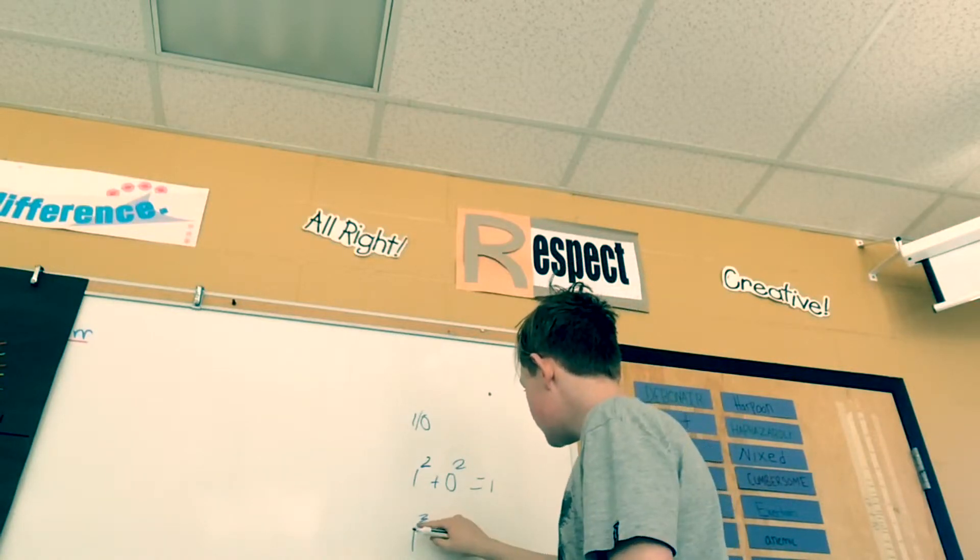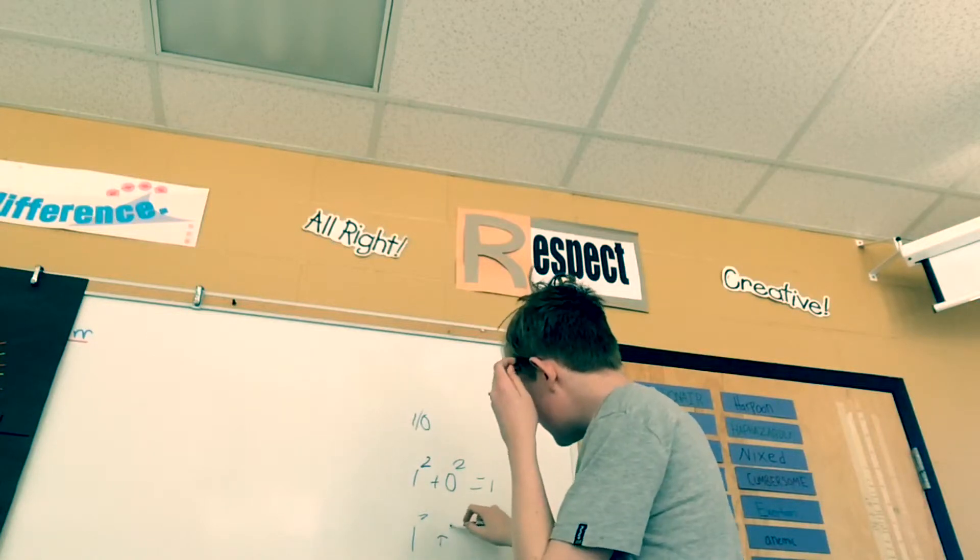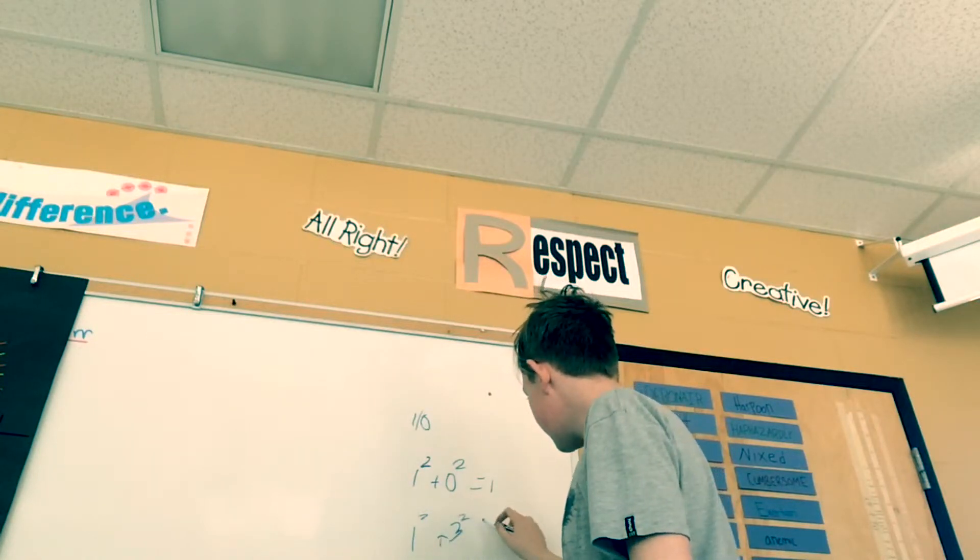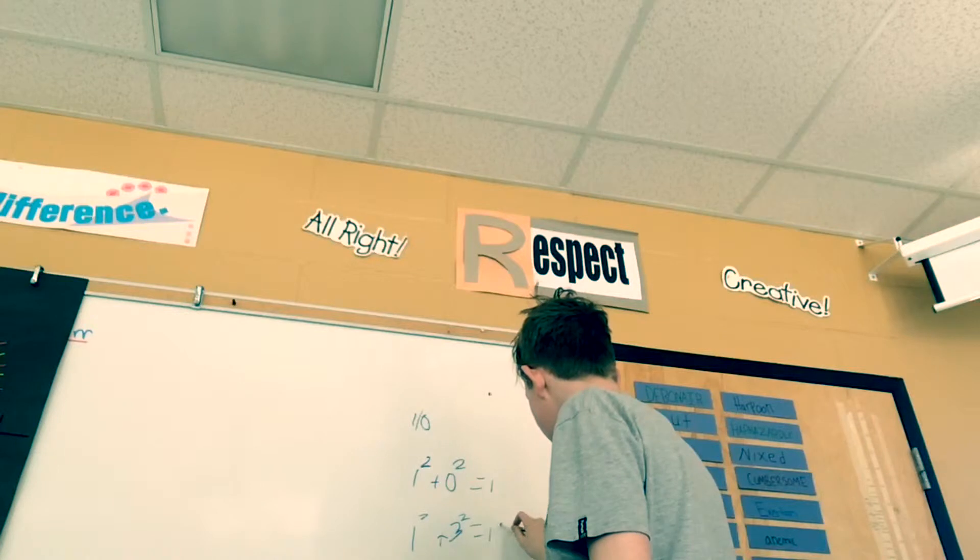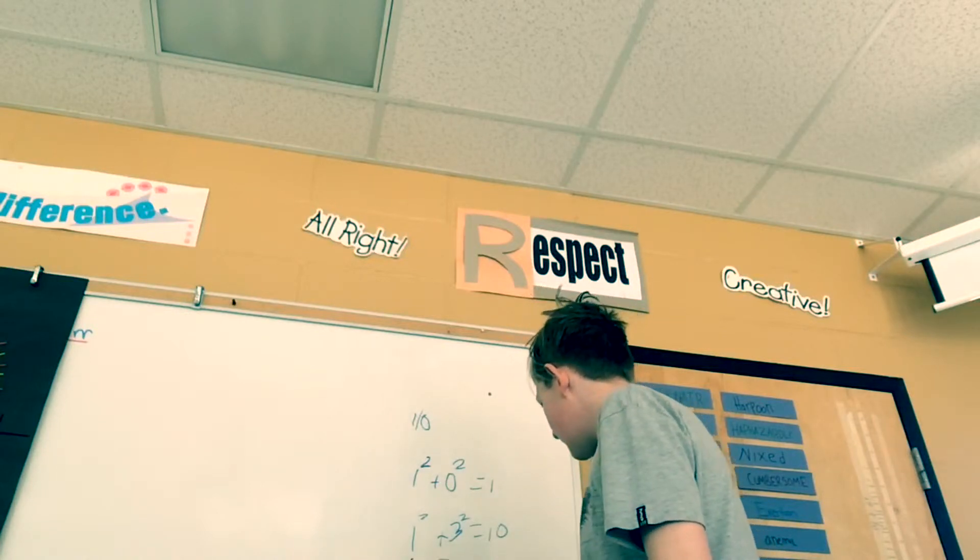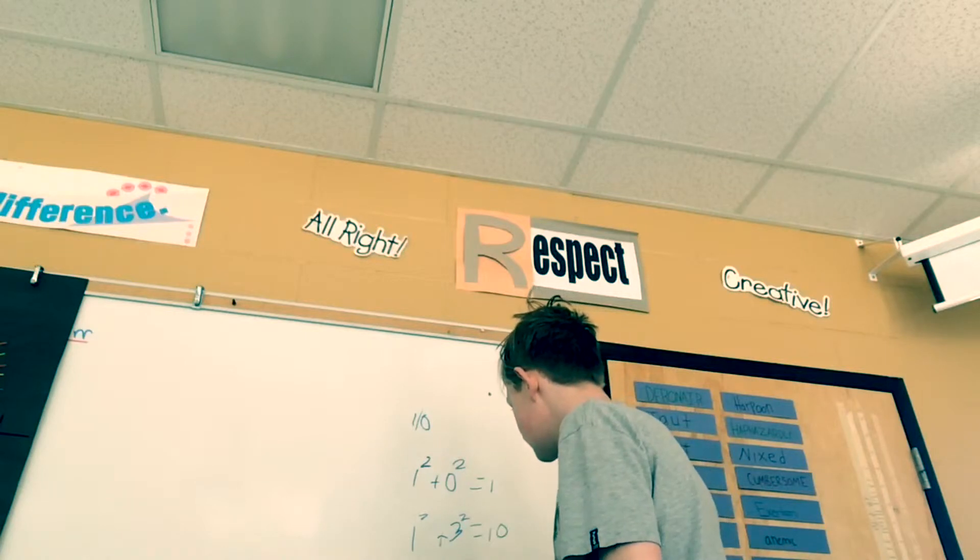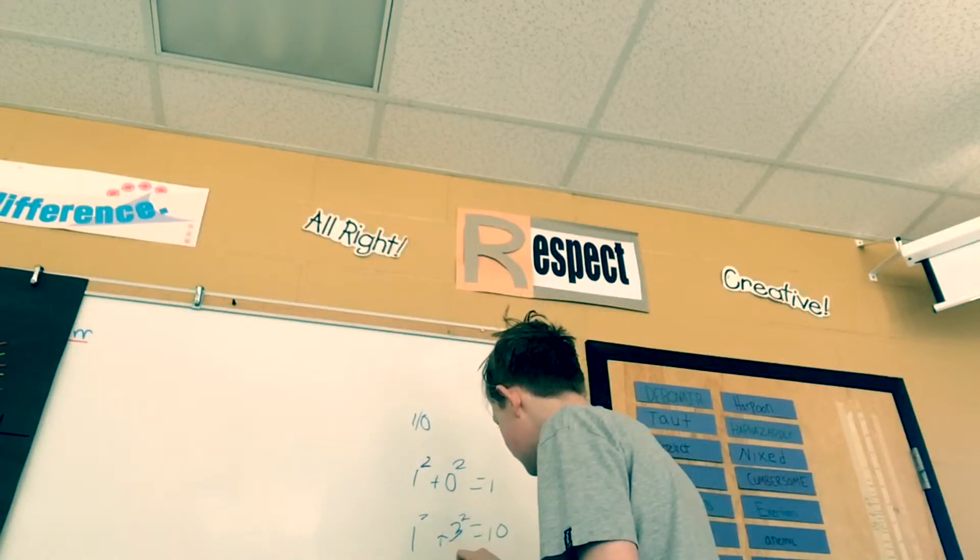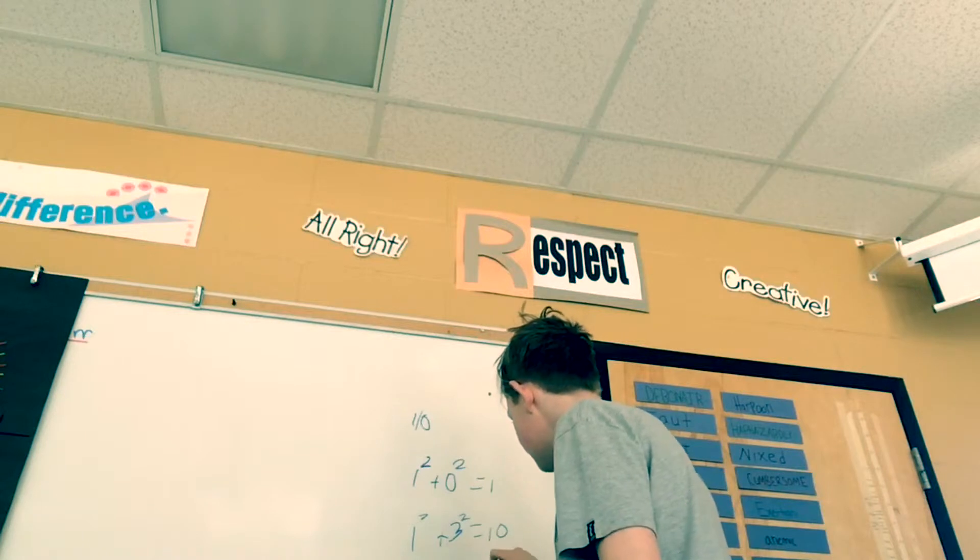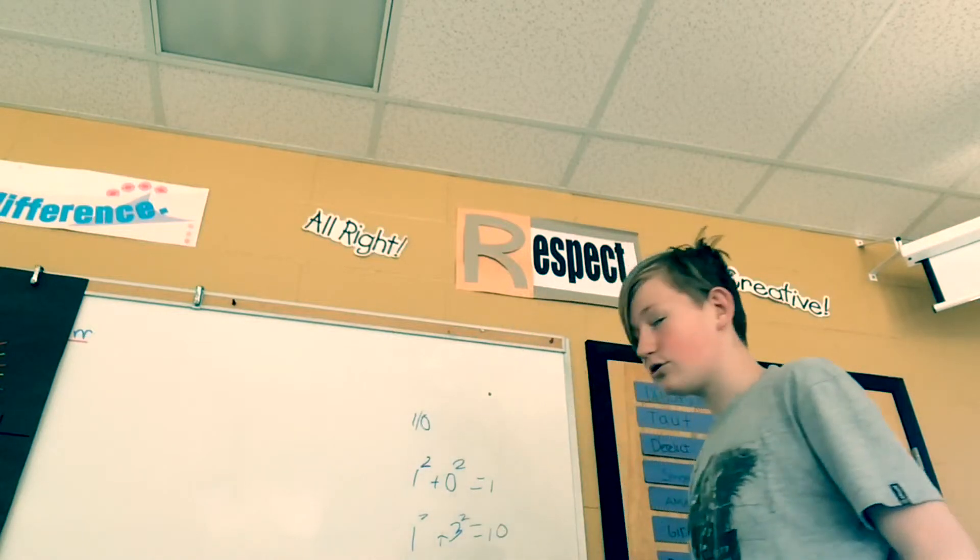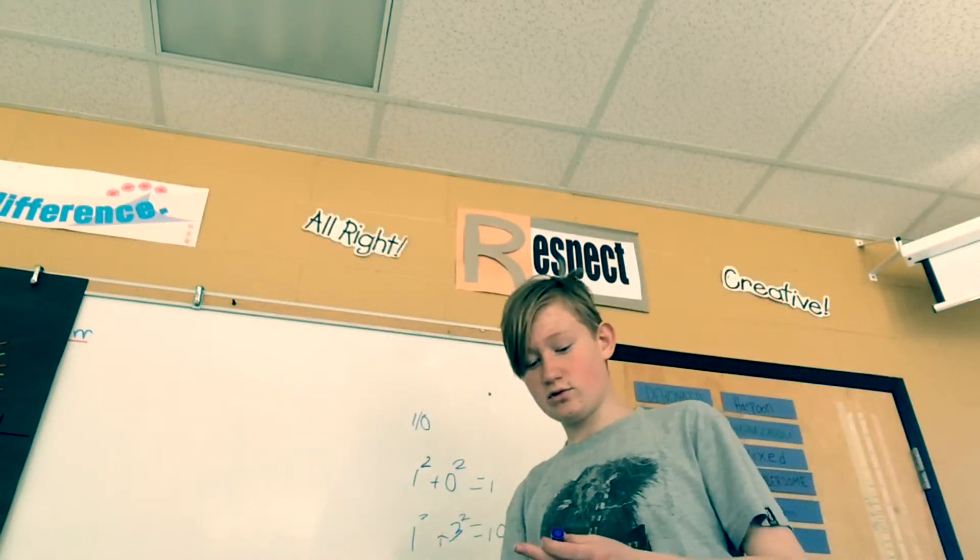One squared plus three squared again equals ten, and ten, and one squared plus zero squared equals one. That's meaning that thirteen is also a happy number. Cool, right?